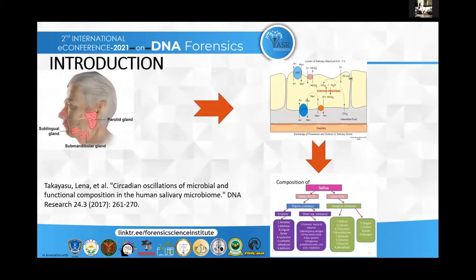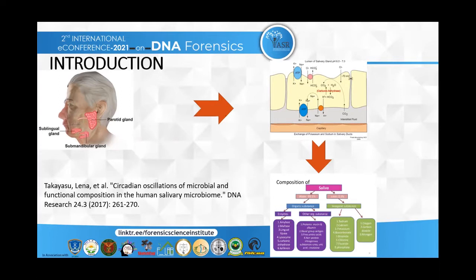Saliva is secreted from three major glands: parotid, submandibular, and sublingual. The composition of saliva involves CO2 infused in the gland, releasing hydrogen carbonate, hydrogen, and sodium ions. There are organic and inorganic substances, including enzymes such as amylase, maltase, lipase, and lysozyme, as well as organic substances like proteins, blood group antigens, and free amino acids.